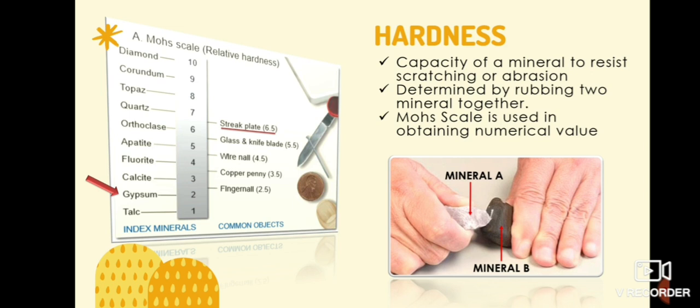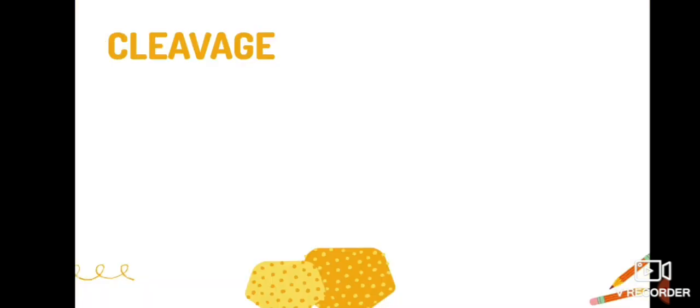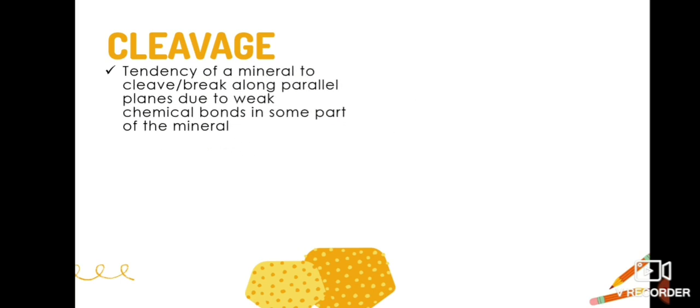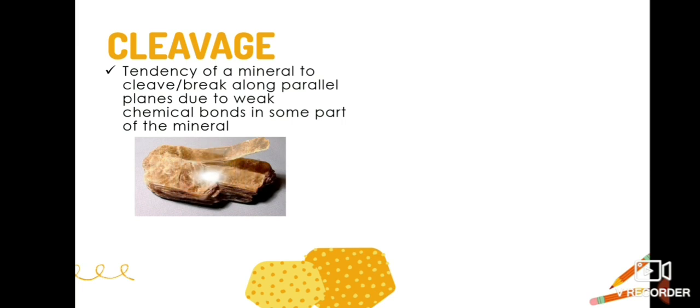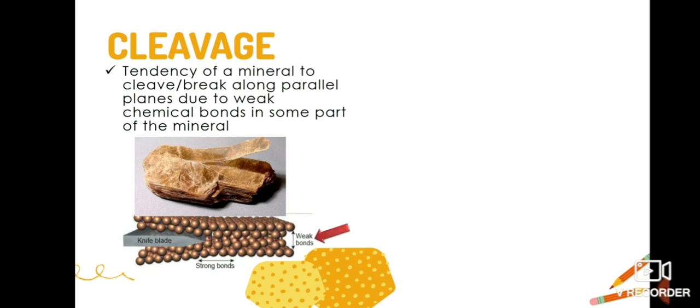Now we have cleavage. Cleavage refers to the tendency of mineral to cleave along parallel planes in the presence of stress. It is due to the weak chemical bonding in some parts of the mineral. Let's take the mineral mica for example. Mica has a very weak chemical bonding in one direction, making it form sheets under the presence of stress.